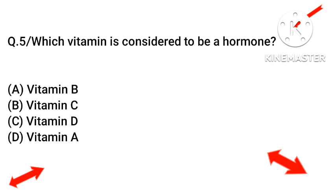Question number five: which vitamin is considered to be a hormone? The options are option A vitamin B, option B vitamin C, option C vitamin D, or option D vitamin E. The right answer will be vitamin D, option number C.